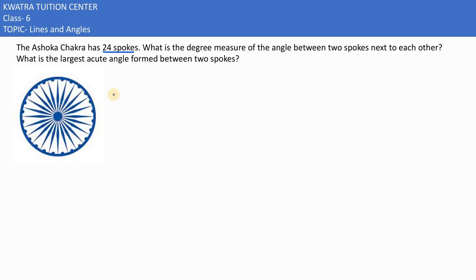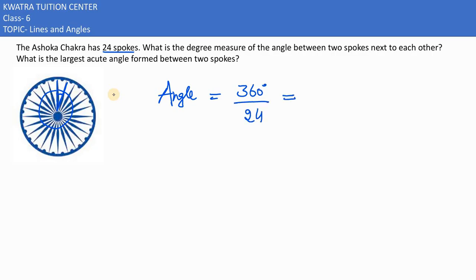How many degrees will be between 2 spokes? Say one spoke is this one and the second spoke is this one — what angle is formed? We know there are 24 spokes and the total angle is 360 degrees. To find the angle between 2 spokes, divide the total angle by the number of spokes: 360 divided by 24. Both can be divided by 15.